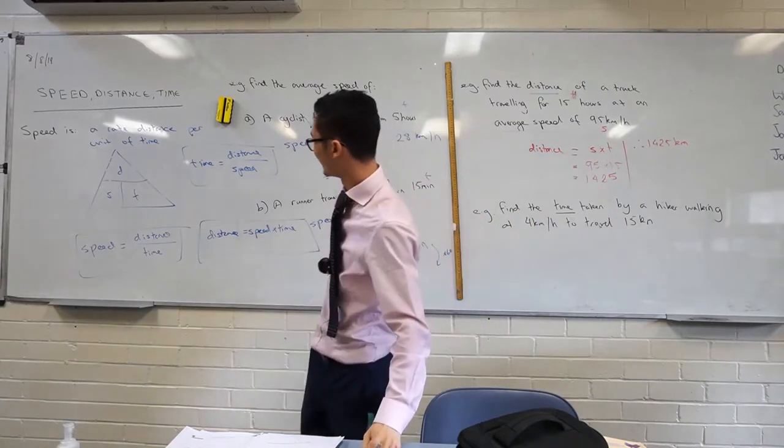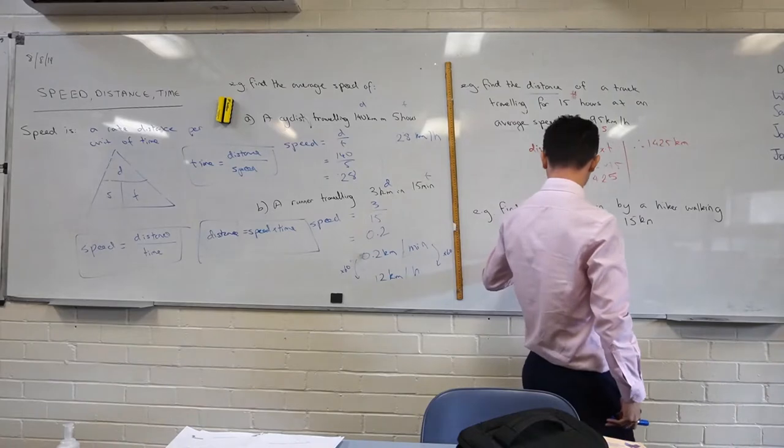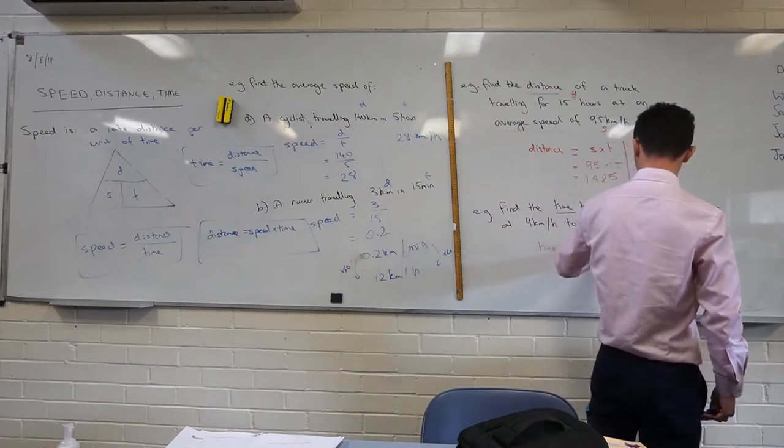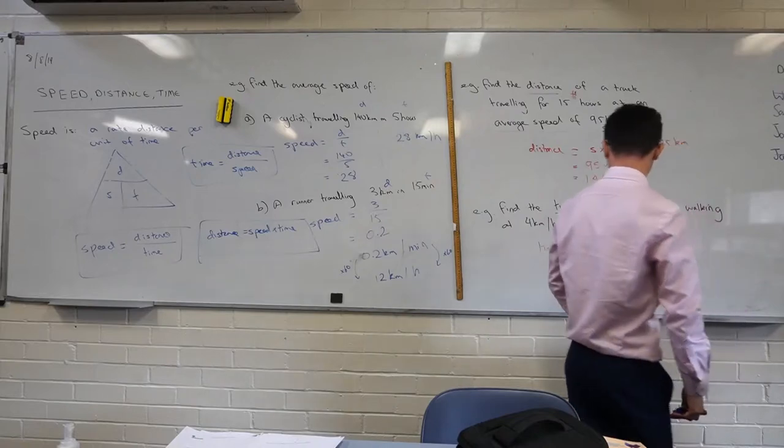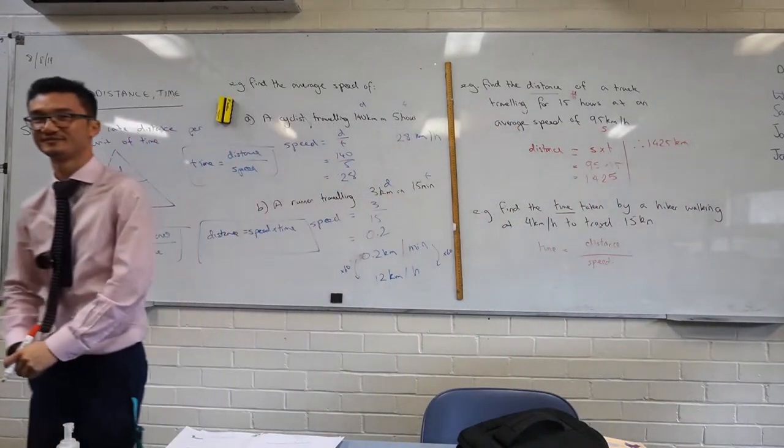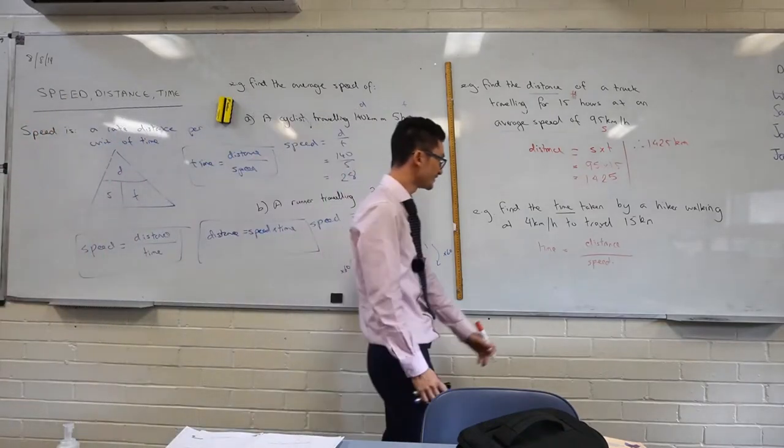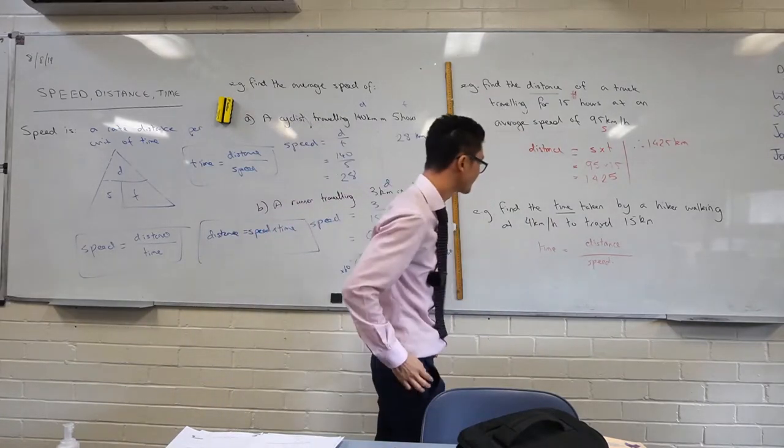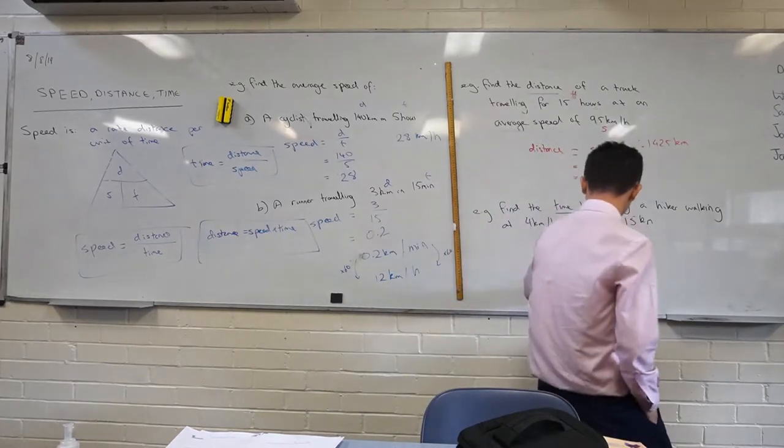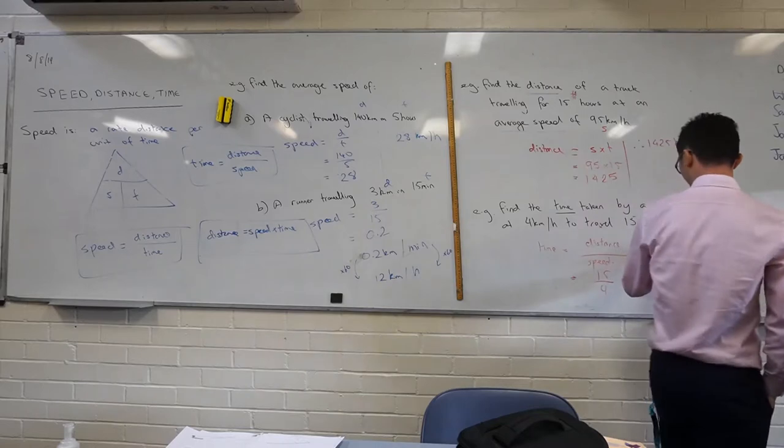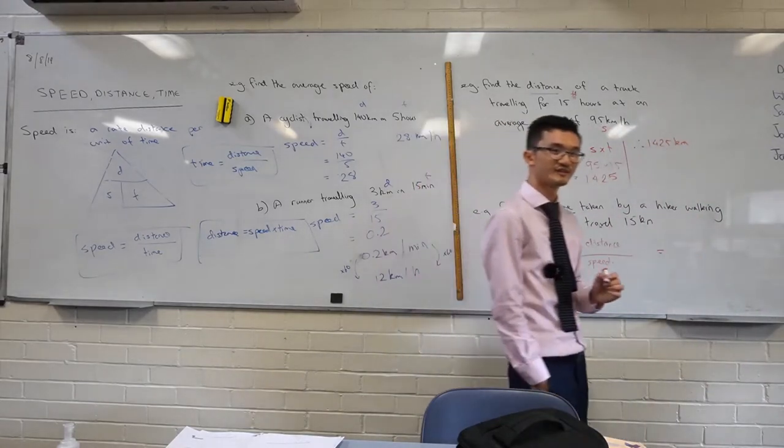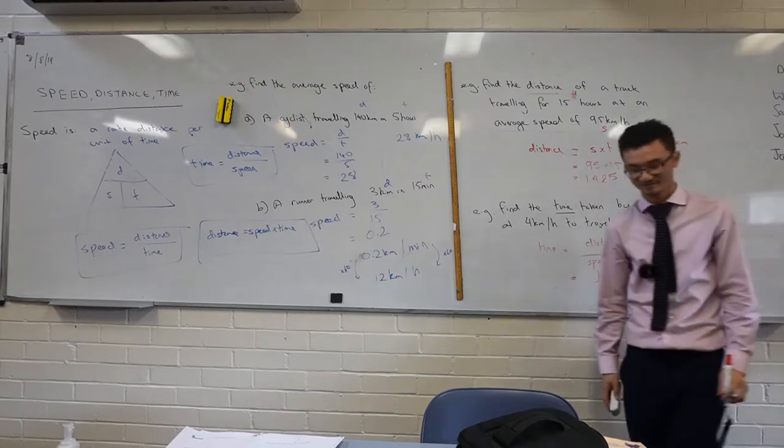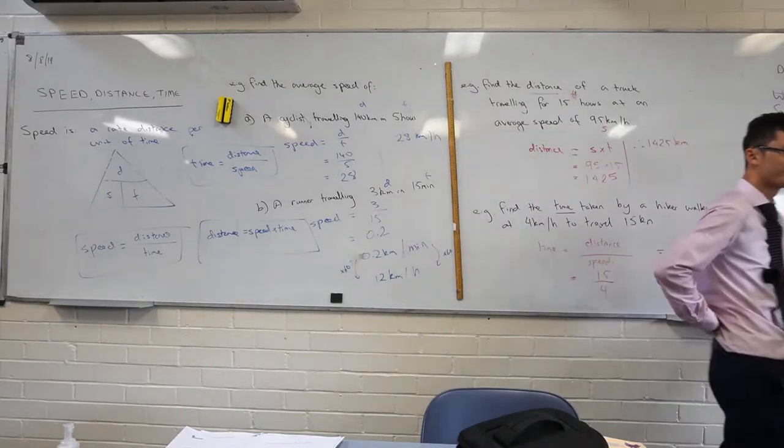How do you go with that for me? Time is equal to distance over speed. For this question, what is my distance and speed? What am I looking at? 15 over 4, and can you calculate that for me? 3.75. 3.75, and let's just stop there. What is that? 3.75. Put it in your calculator.